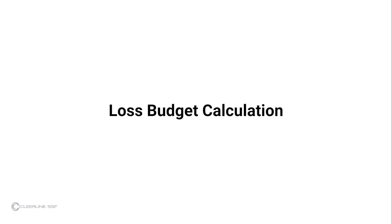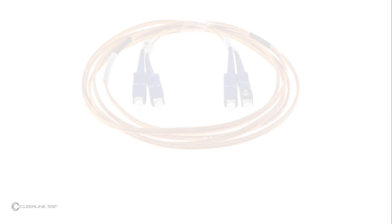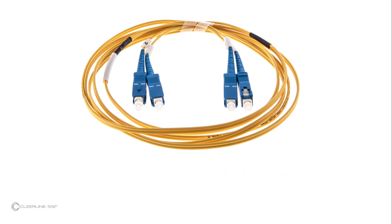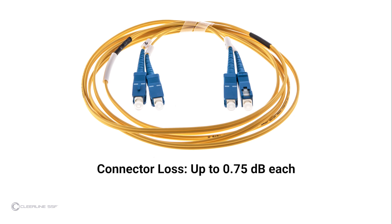Loss budget is the calculation of estimated loss of all connectors and cable in a link. Loss budgets can be calculated during design; in testing after installation, the actual loss is compared to the budget to ensure proper installation to industry standard. Each connector under test is allowed up to 0.75 decibels per the EIA-TIA 568 standard.